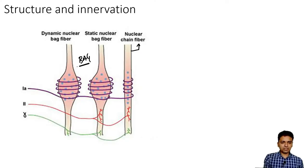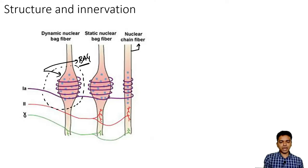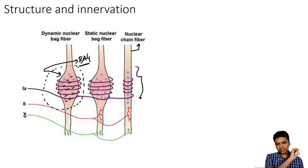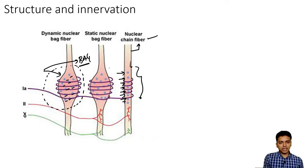When I say the bag fiber, you can see that the central part of this fiber is very much dilated. This dilated part is referred to as the bag. And within this central dilated part, you can see there are so many nuclei — a congregation of nuclei is there. In contrast, the nuclear chain fiber has no such dilatation of the central part. The central part and the peripheral part are almost the same — they are slender, chain-like structures — and the nuclei are arranged in a single row, not in a group.